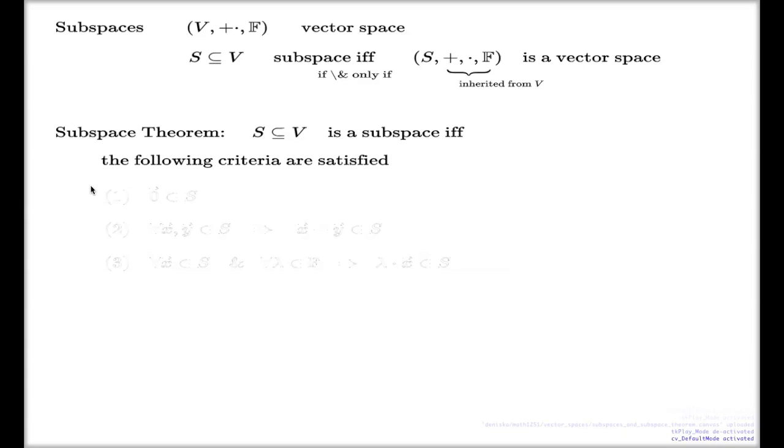And there are three criteria, not ten axioms anymore but three criteria. So the advantage of using this subspace theorem, it reduces the number of tests you have, the number of verifications you have to do, down to three criteria. And here they are. First criteria, this subset it must contain the zero vector, the zero vector which is inherited from the larger vector space.